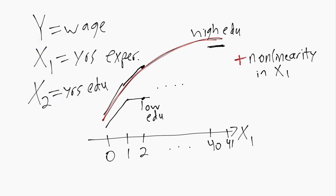And then we also have this interaction between X1 and X2, where depending on the education level, we get a different slope of wage with respect to years of experience.